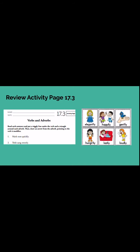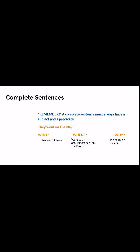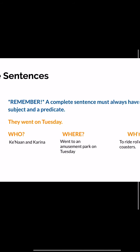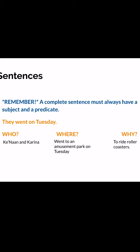Once you're finished completing activity page 17.3, take a look at this slide. This is all about complete sentences — also a review. Remember, a complete sentence must always have a subject and a predicate. Let's take a look at this sentence: 'They went on Tuesday.' Is that a complete sentence? It is a complete sentence, but it's really short — it's missing some details.